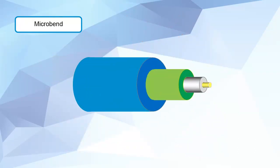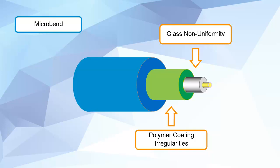Several factors can contribute to micro-bending induced loss, including glass non-uniformity at the core cladding boundary and polymer coating irregularities, as well as packaging, installation, and environmental effects.